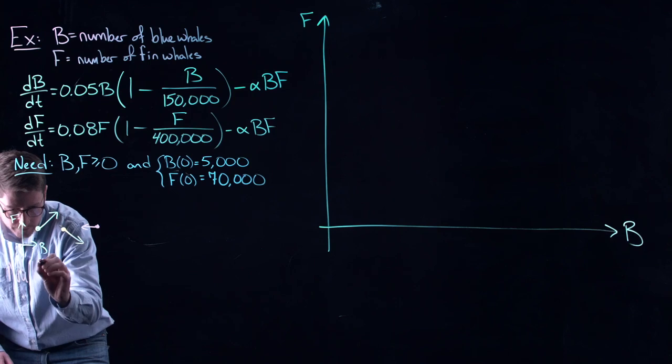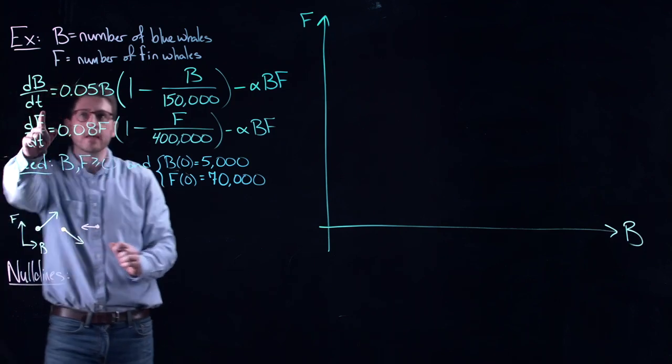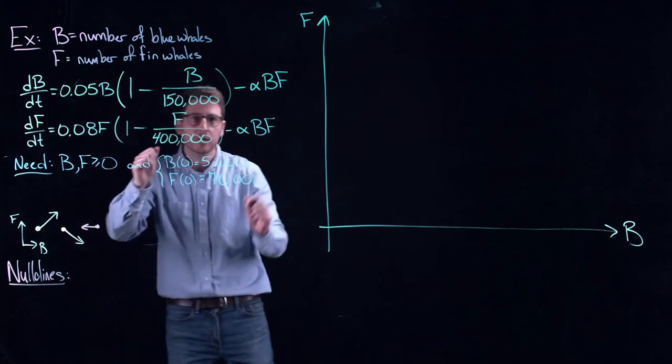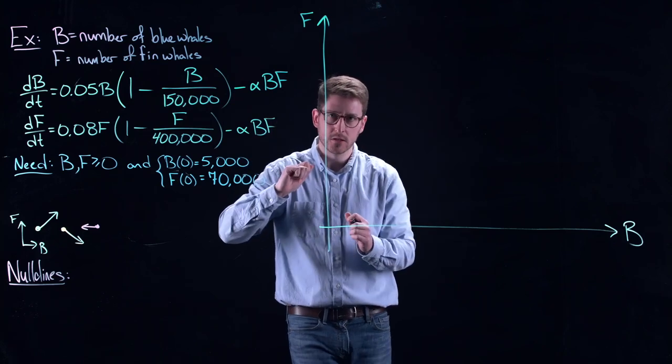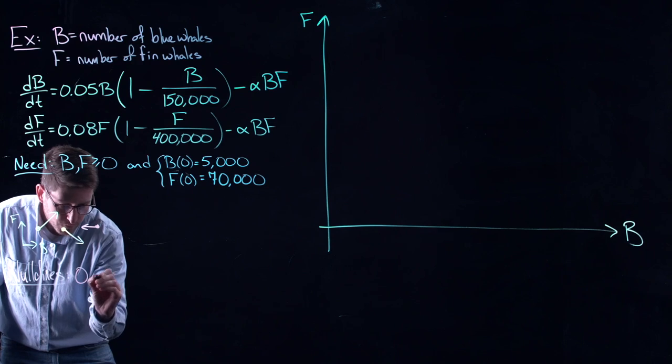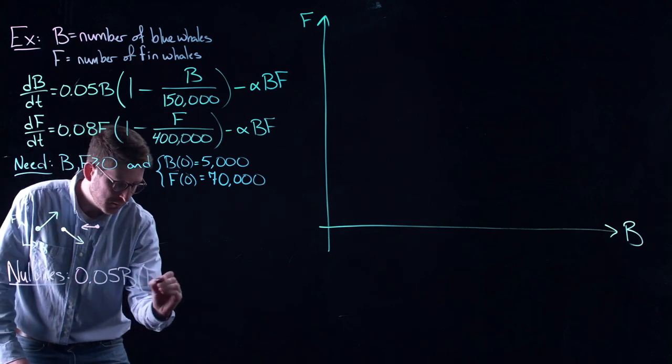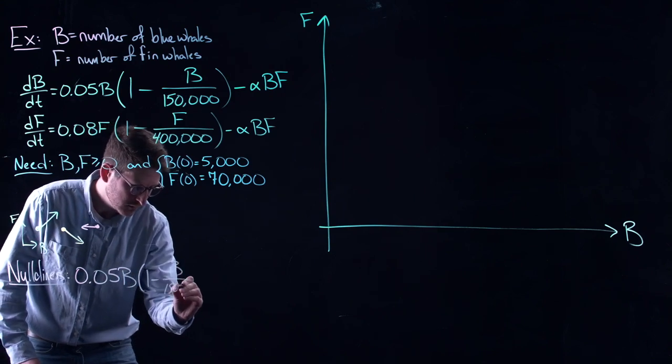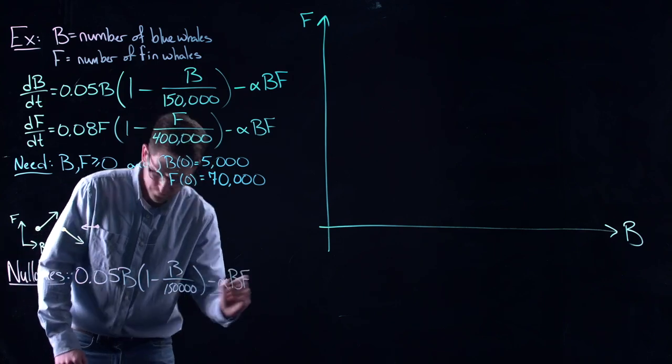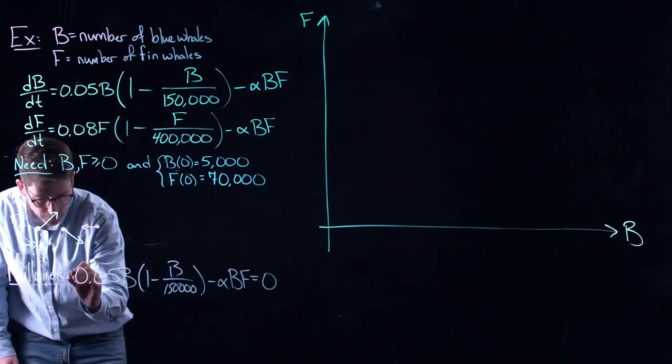Now, what I'm going to do is I'm going to sketch out what are called the nullclines. So nullclines, they are when you set each one of these components to zero, but not both of them. Remember, steady states need both of these things equal to zero. A nullcline is each one individually. So, the first nullcline is this, 0.05B, 1 minus B over 150,000 minus alpha BF is equal to zero. That is nullcline number one.